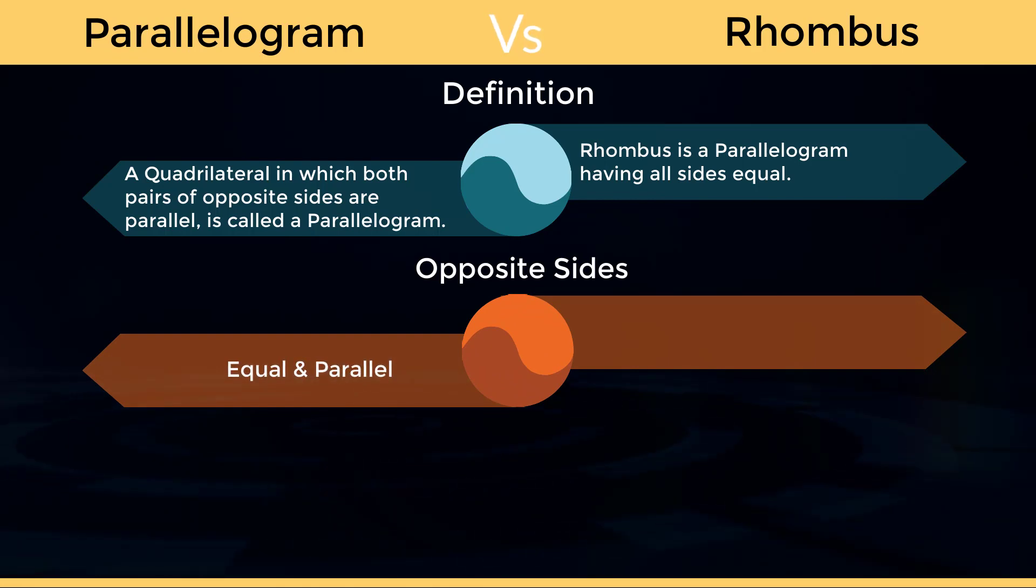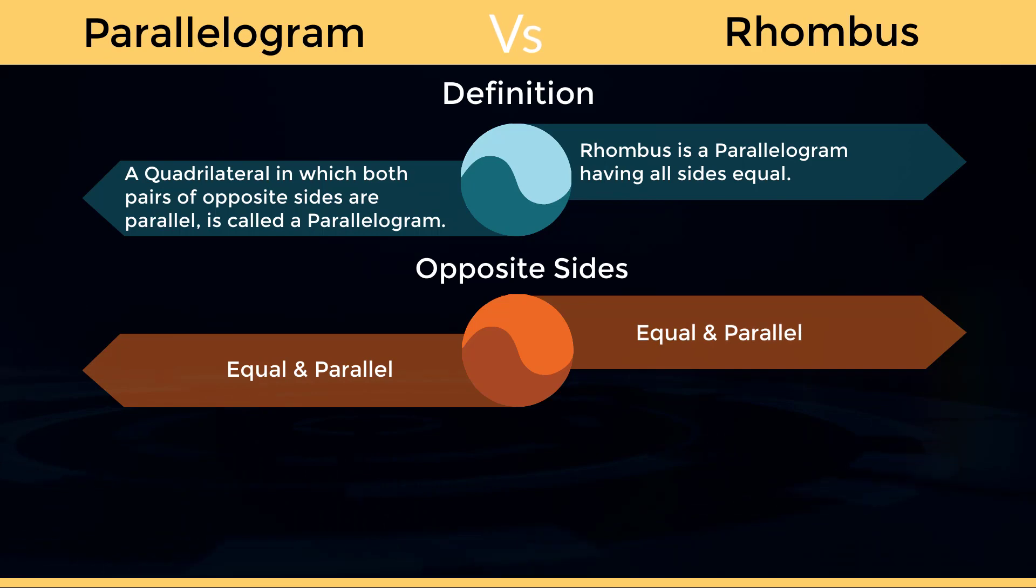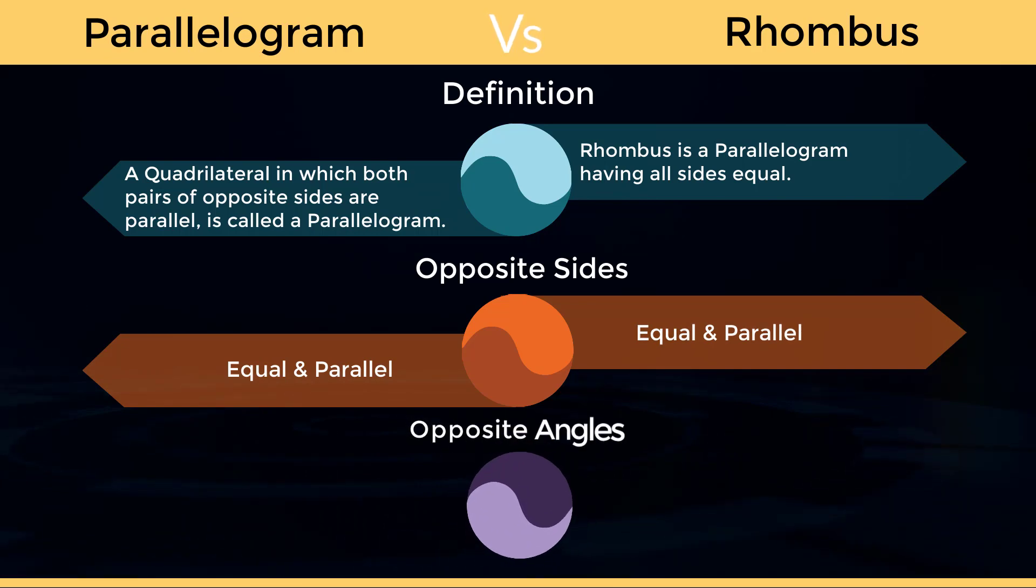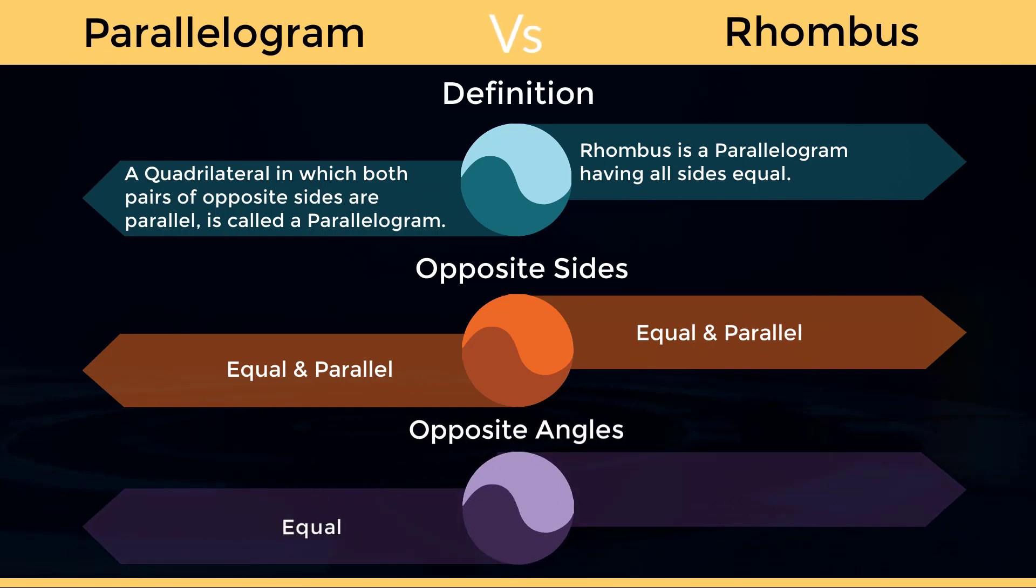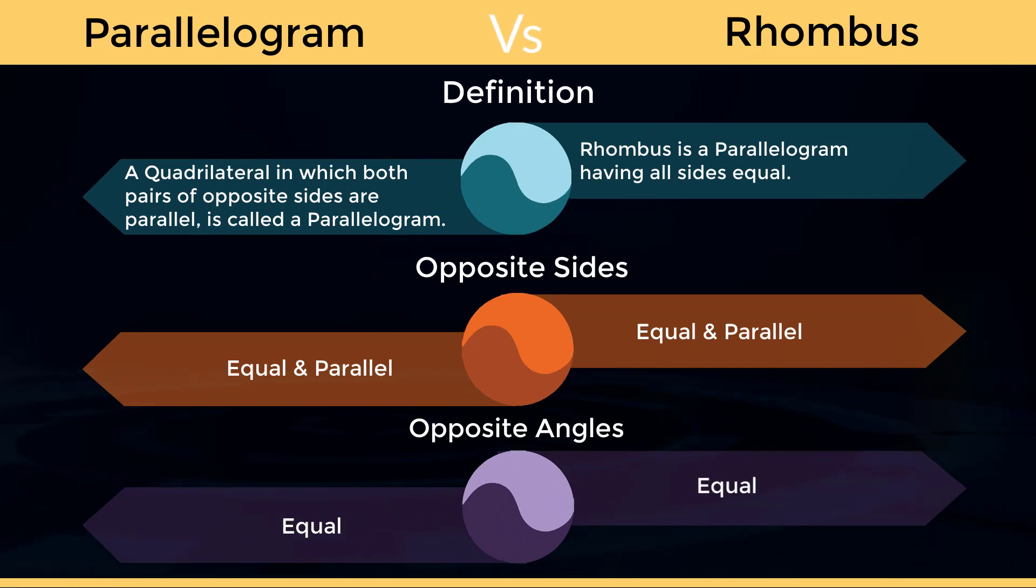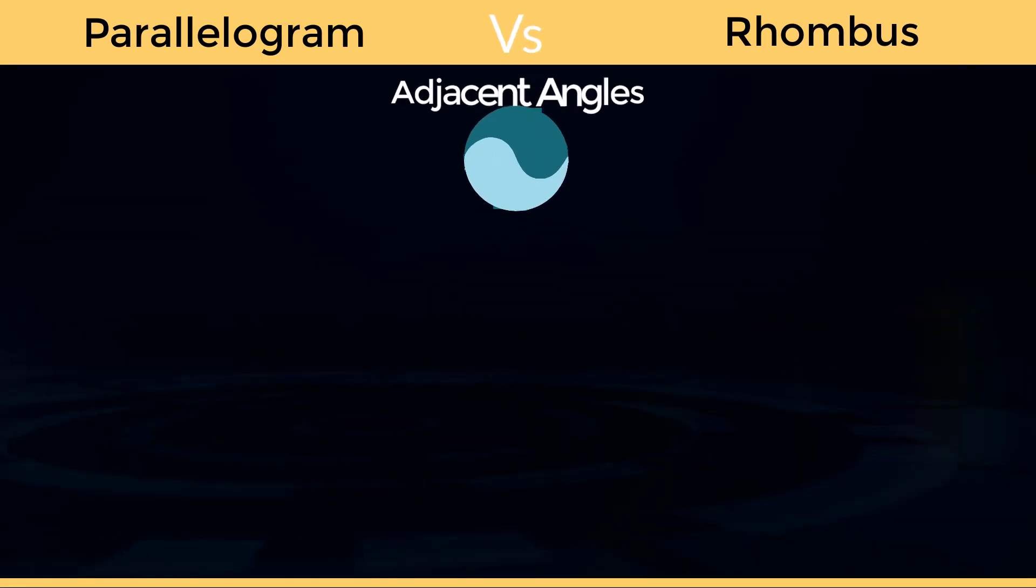Opposite sides of parallelogram are equal and parallel. Opposite sides of rhombus are equal and parallel. Opposite angles of parallelogram are equal. Opposite angles of rhombus are equal.